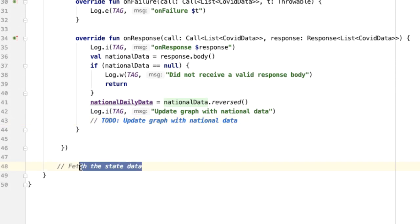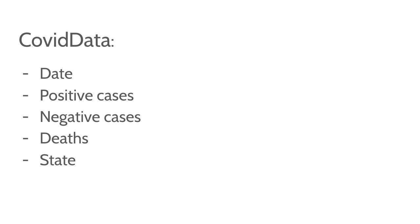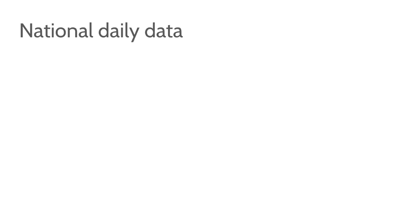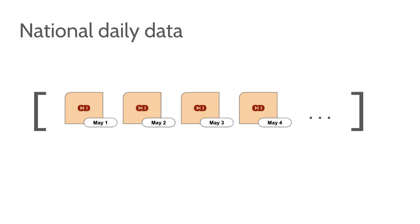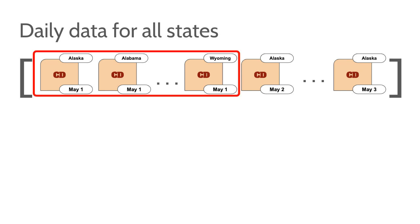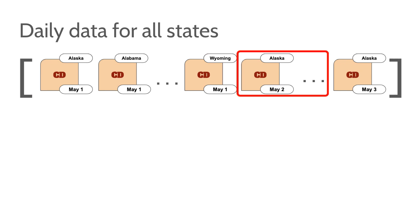To finish up this video, I also want to fetch the state data and validate that this is working. What we've done so far is use Retrofit to talk to the API and automatically convert the JSON data into a class called CovidData, which includes attributes such as date, number of positive cases, negative cases, and deaths. When we talk to the state endpoint, we also want to know the state this data is relevant for. We reversed the order of the national list so the oldest CovidData is at the front and the most recent is at the end. Similar logic applies for the state data, but there's a wrinkle — all the state data is combined in one large list, giving us all data for all states for May 1, then May 2, and so on.